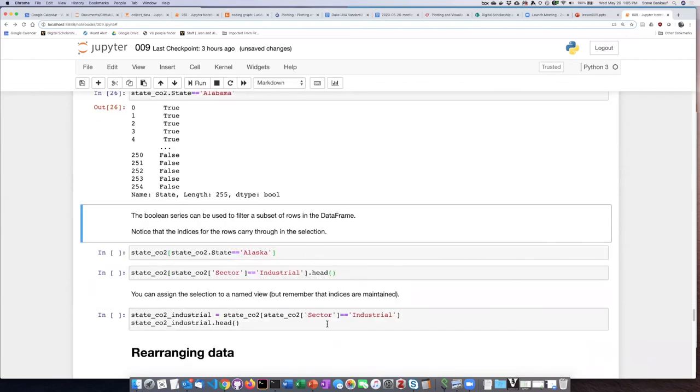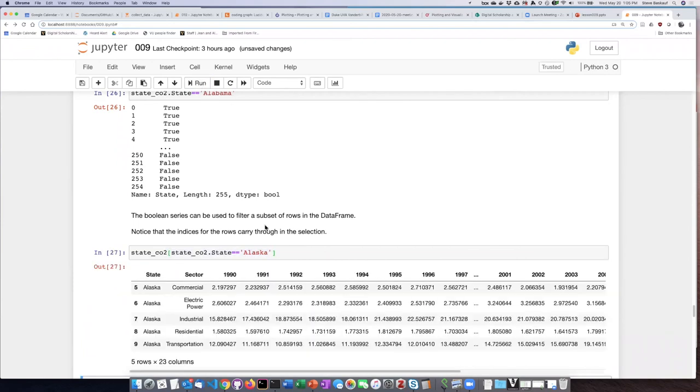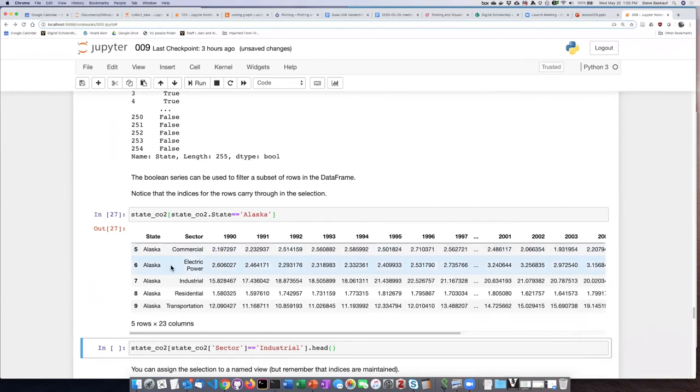So if I then want to filter by a particular condition, so for example, what if I want the condition that the state column has a value of Alaska, I can insert that into the square brackets. And then if I run this, we'll see that the output DataFrame only includes rows five through nine, which are the rows in which this condition was true.